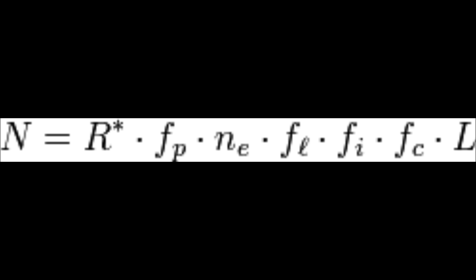R is the rate of star formation. Fp is the fraction of stars with planets. Ne is the average number of life-supporting planets per star. Fl is the fraction of those that developed life. Fi is the fraction that develops intelligent life. Fc is the fraction of civilizations that release detectable signs of their existence. And L finally is the length of time during which detectable signs are released.